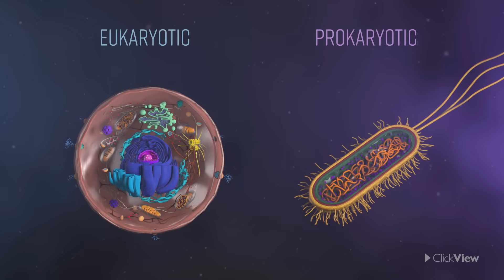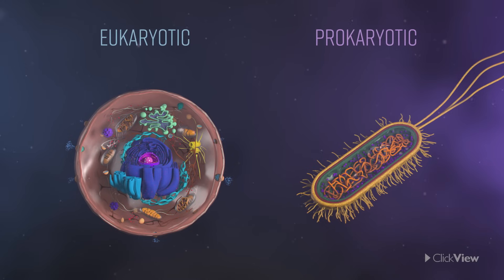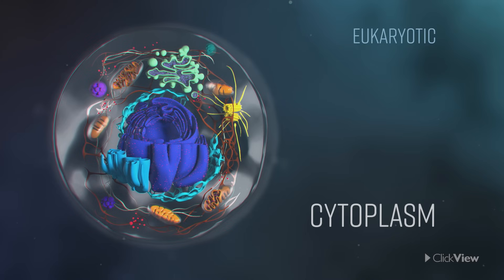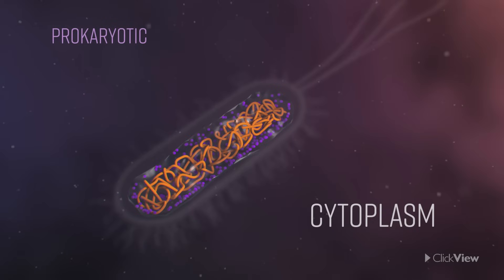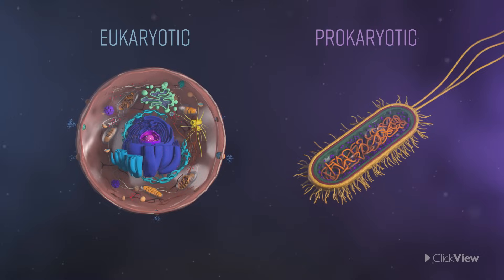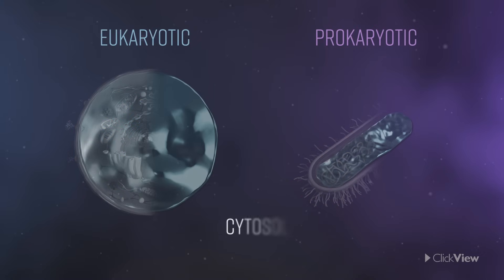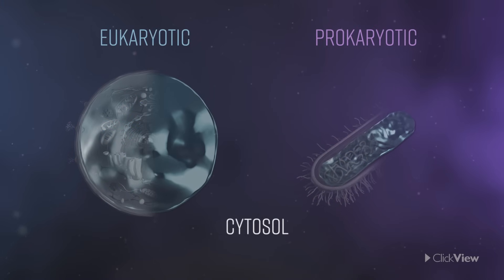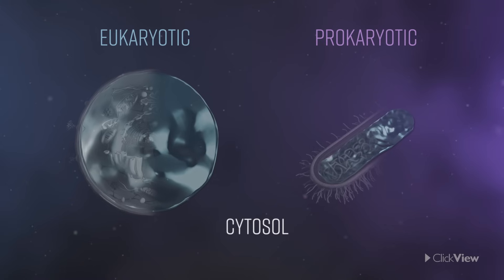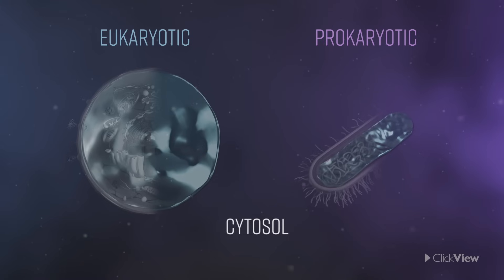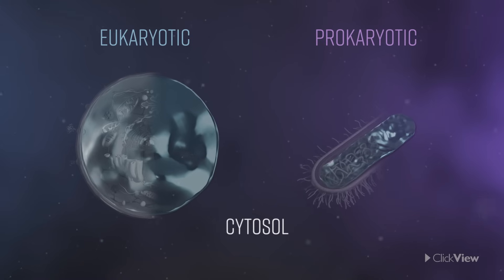Both also contain cytoplasm, but in eukaryotic cells it is defined as everything within the cell outside of the nucleus. In prokaryotic cells, the cytoplasm refers to everything contained inside the cell membrane. The gel-like cytosol is a major part of the cytoplasm in both types of cell, and this solution is the site of many of the cell's metabolic processes, such as the synthesis of protein.